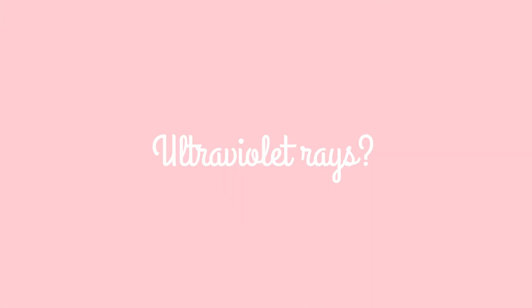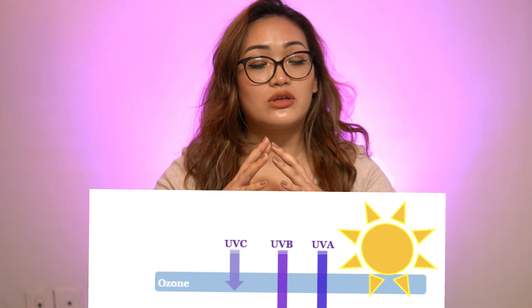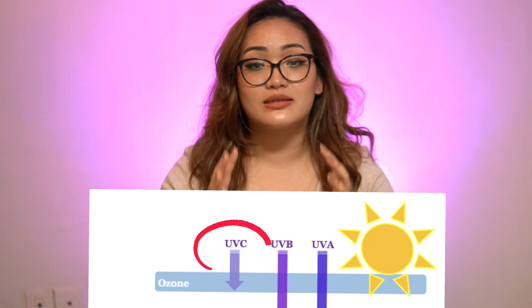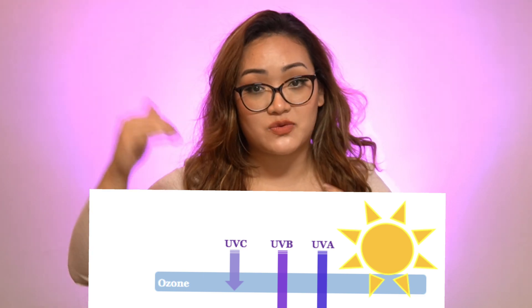What are ultraviolet rays? These are rays — the sun's energy which is emitted from the sun. There are ultraviolet rays A, B, C, and also infrared rays and visible light. The most important ones are UVA and UVB. UVC doesn't reach the earth; it is blocked by the atmosphere.